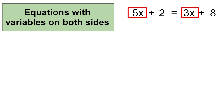You can decide to remove 5x or you can remove 3x. I recommend removing the smallest variable term, since removing the largest one would involve negative numbers, which just adds onto your list of things to do while solving the equation. So for that reason, I'm going to remove 3x.